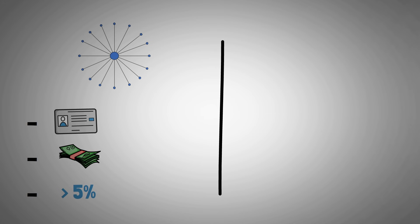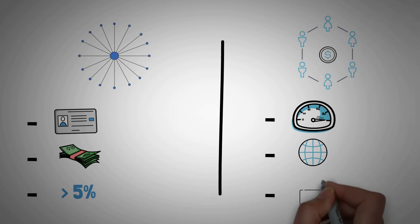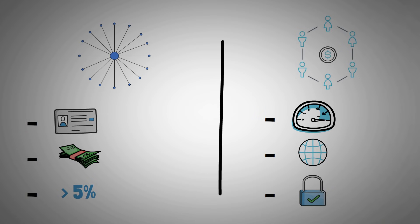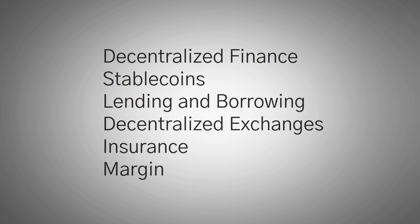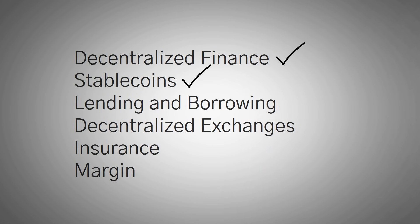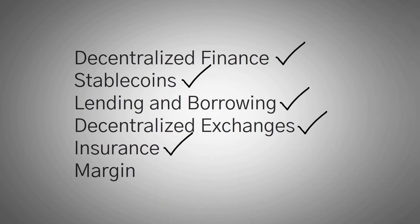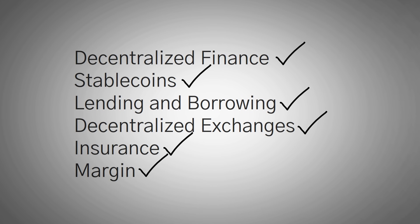In decentralized finance, margin trading can be a lot quicker, open to anyone in the world with money, and a lot safer as well. So wrapping this video up, we have covered 5 big pillars in decentralized finance: stablecoins, lending and borrowing, decentralized exchanges, insurance, and margin.